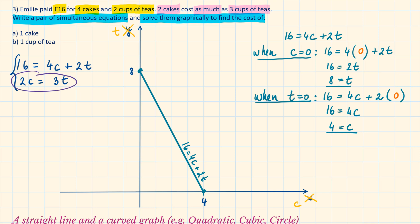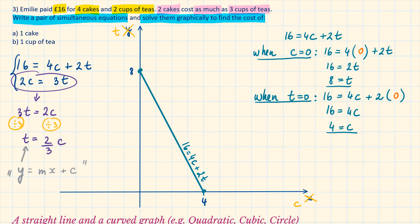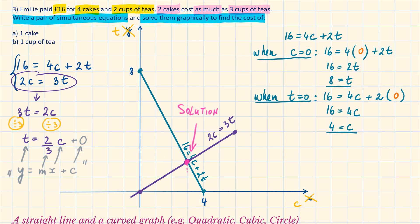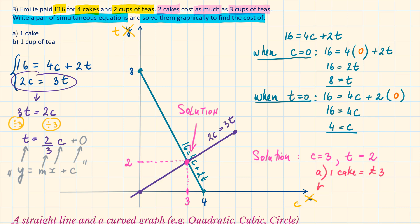To draw the second line, we compare 2c equals 3t with y equals mx plus c. Making t the subject gives t equals two-thirds c. The gradient is two-thirds and the y-intercept is 0. Plotting the y-intercept and drawing the gradient — 2 up and 3 across — gives us the line. The solution where the two lines cross is c equals 3 and t equals 2. So 1 cake costs £3 and 1 cup of tea costs £2.